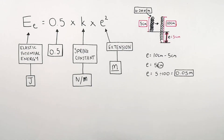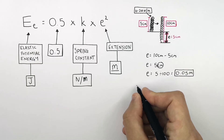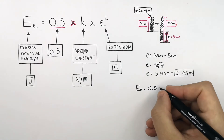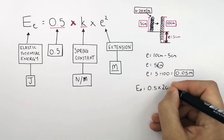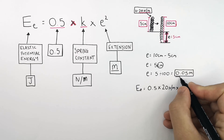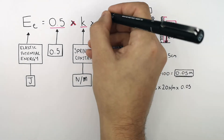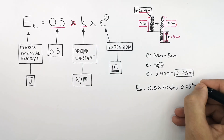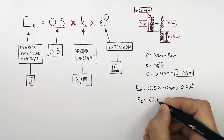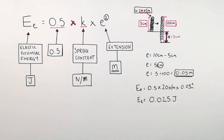So we've got the spring constant k and the extension. We can now calculate the elastic potential energy stored in the spring. E equals 0.5 times k — k is 20 newtons per metre — so it's 0.5 times 20, multiplied by 0.05 squared. The elastic potential energy stored in this spring is 0.025 joules.